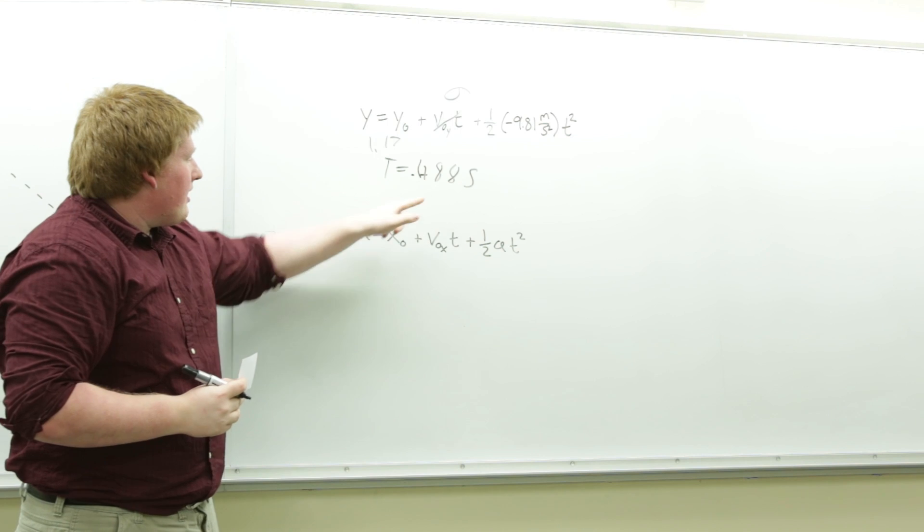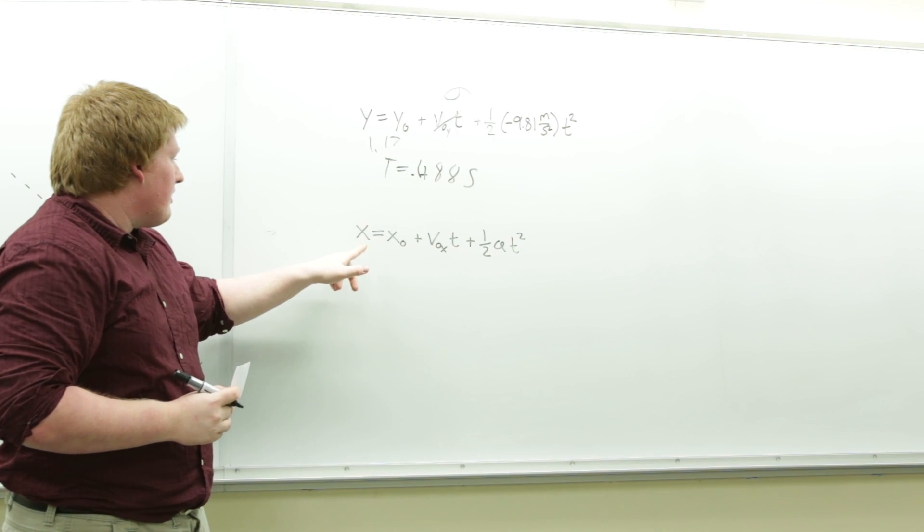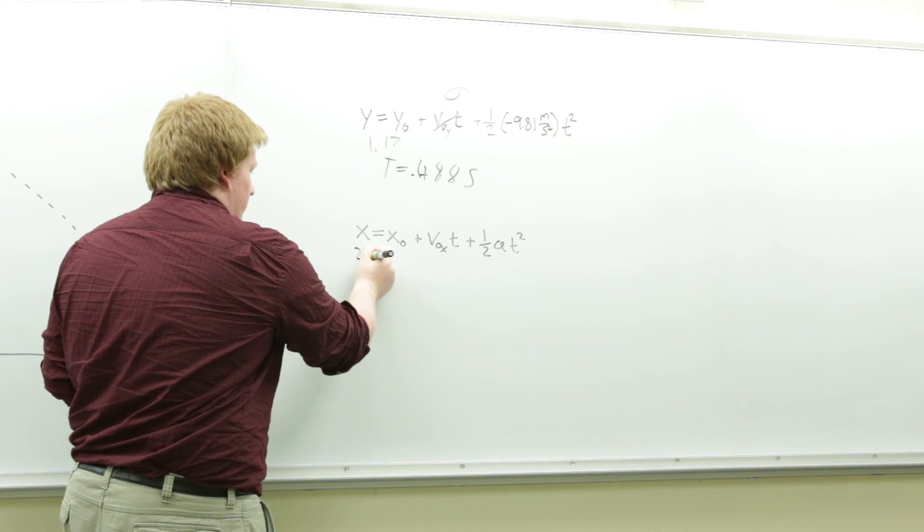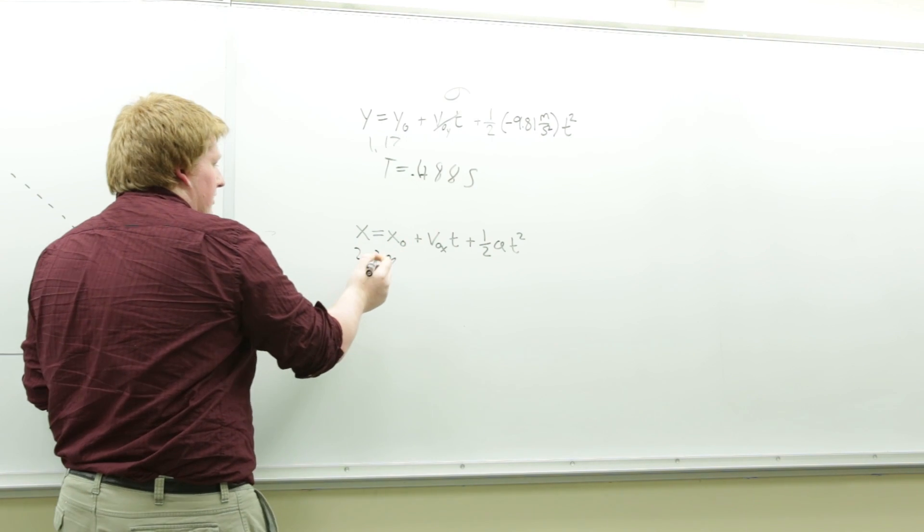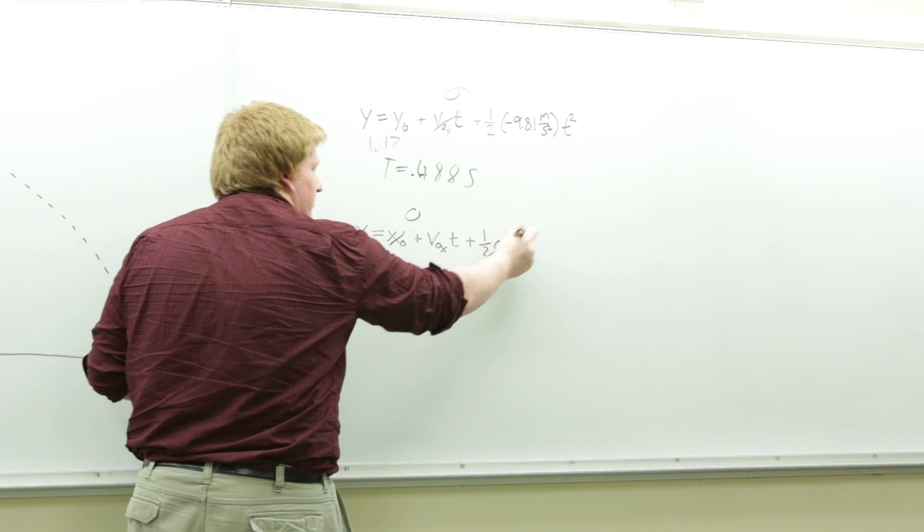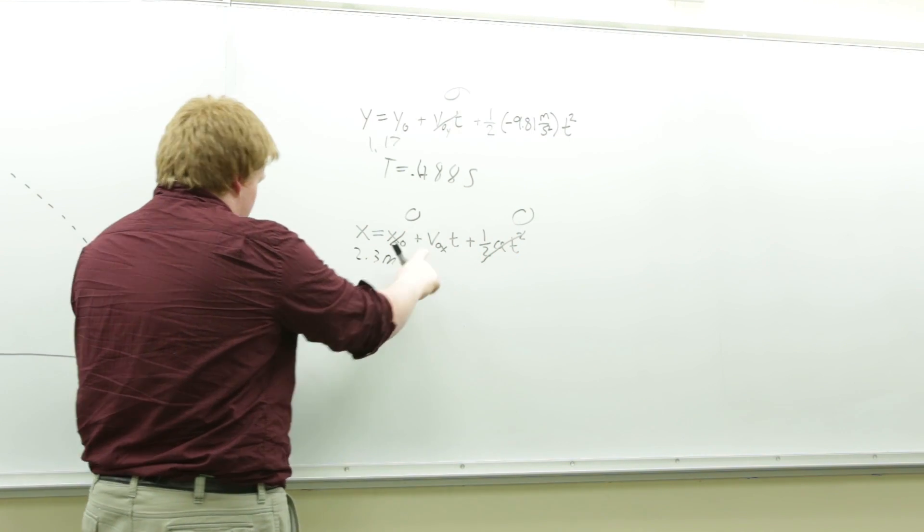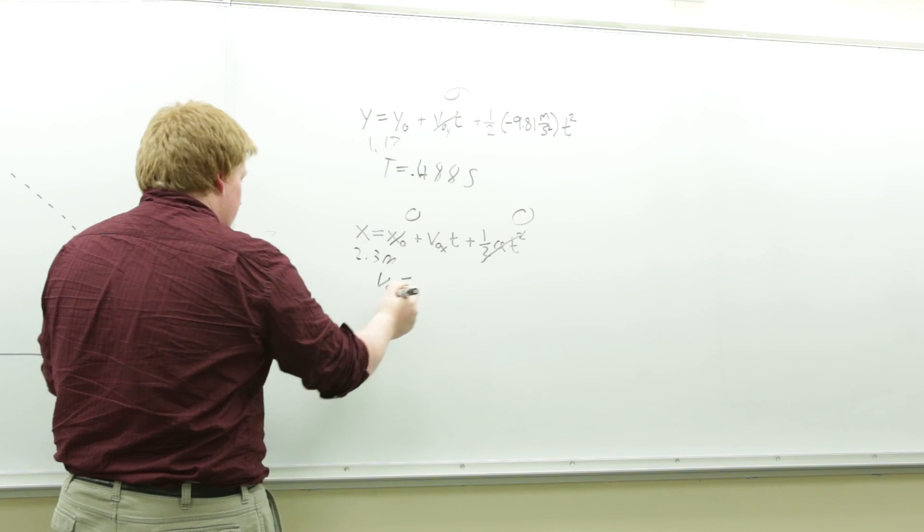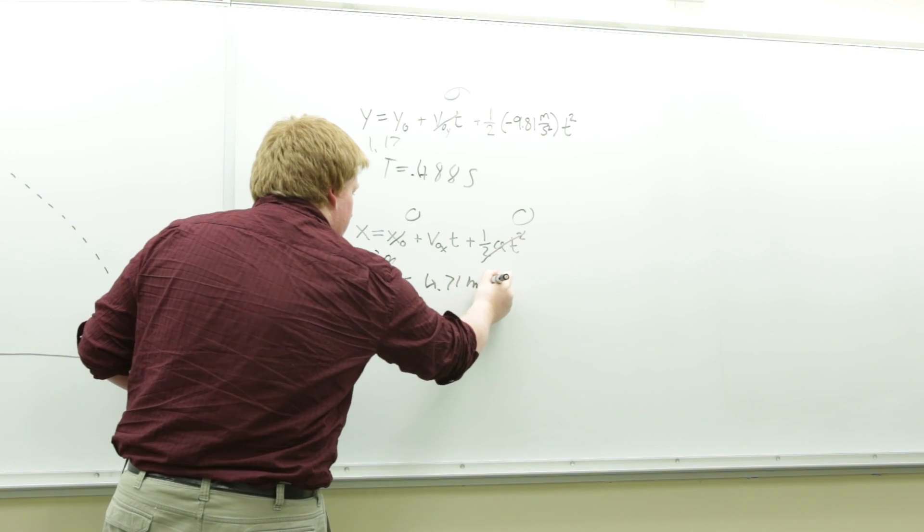Then, with that time, we can plug in to this equation, knowing that our X-final equals 2.3 meters, and our X-naught equals 0, and our one-half AT squared equals 0 since there is no acceleration, we can find that our V-naught equals 4.71 meters per second.